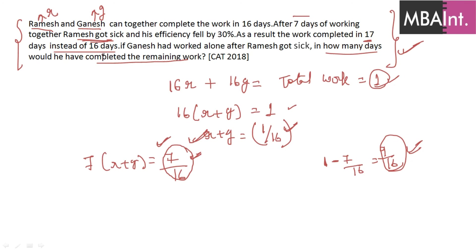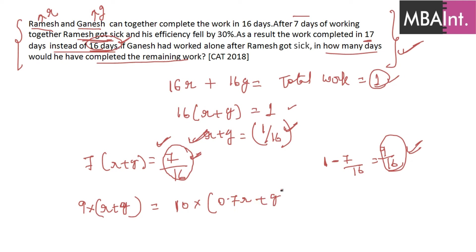The same 9/16 of work that would take 9 days at full efficiency now takes 10 days with Ramesh's efficiency reduced by 30%. Setting up the equation based on this condition and solving gives us the relation: G = 2R — Ganesh's efficiency is twice Ramesh's.